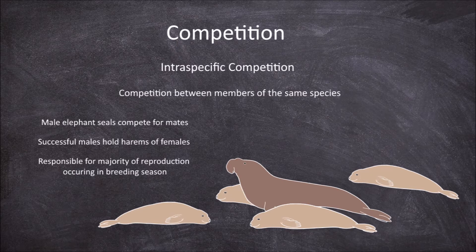Competition for mates, such as in this example, is a factor in natural selection. Those males with the favourable traits that enable them to win and hold harems are the ones mostly passing down these favourable traits to the offspring.